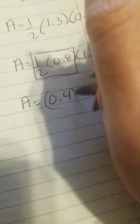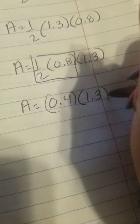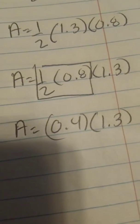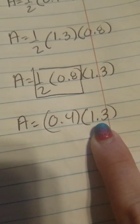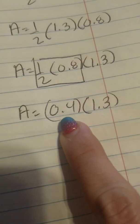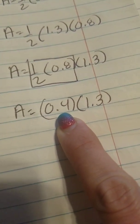Alright, so I'm going to take half of 0.8. Half of 0.8 is 0.4. Then I'm going to take 0.4 and multiply it by 1.3. I'm going to put the 1.3 on top because it has a greater value, and I'm going to put 0.4 on the bottom.